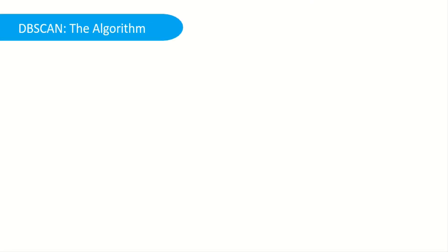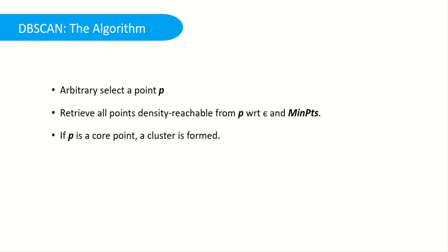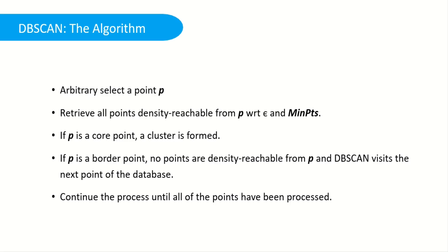Now let's quickly look at the DBSCAN algorithm. The first step is to arbitrarily select any point P, which is our object, then retrieve all points density reachable from P with respect to epsilon and min points. If P is a core point, a cluster is formed. If P is a border point, no points are density reachable from P and DBSCAN visits the next point of the database. Continue the process until all points have been processed.